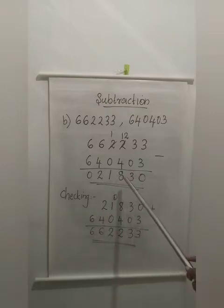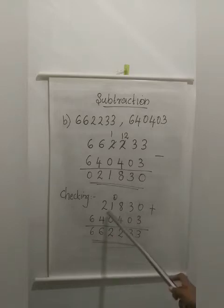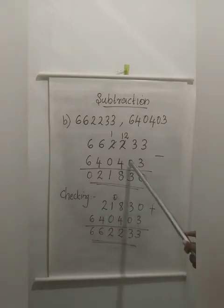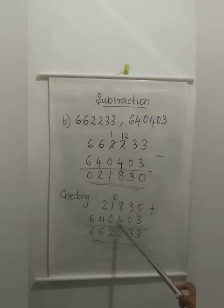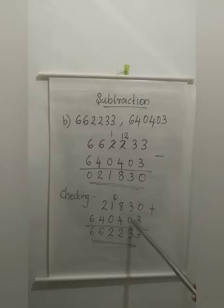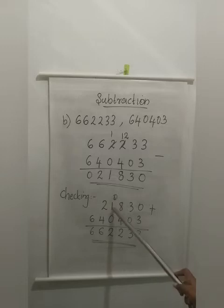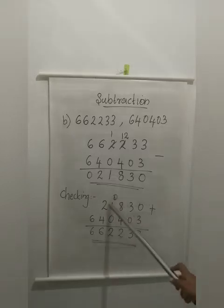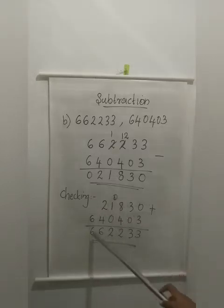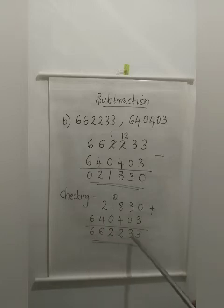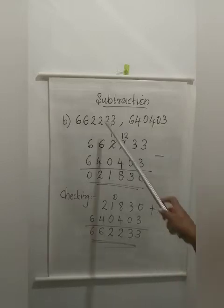I said we have to check. So checking: 21,830 plus 6,40,403. Adding 0 plus 3 is 3. 3 plus 0 is 3. 8 plus 4 is 12 — write 2, 1 carry over. Carry over plus 1 plus 0 is 2. 4 plus 2 is 6. So we got 6,62,233 — that is our minuend.